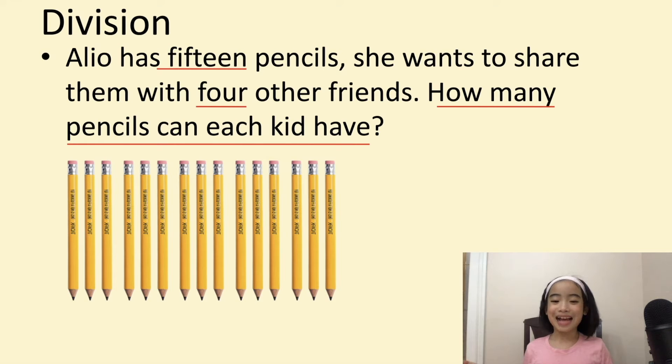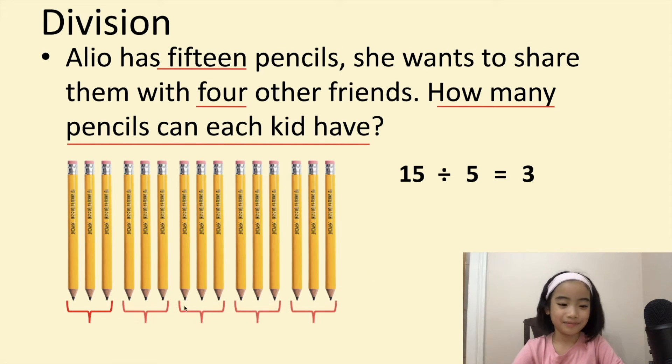When a question asks you how many groups of things or how many things in each group, it is a division problem. So, now let's divide. Fifteen divided by five equals three. So, each kid has three pencils. It is equal.